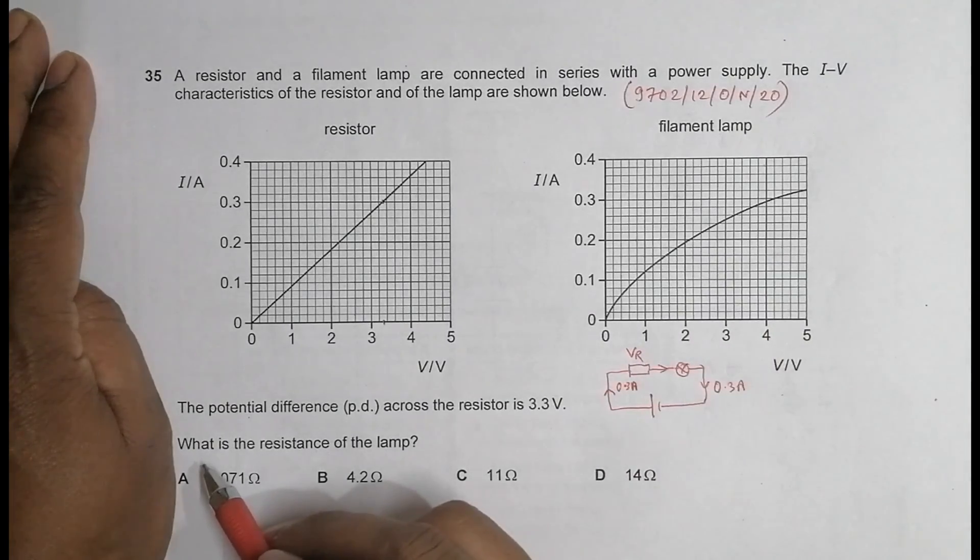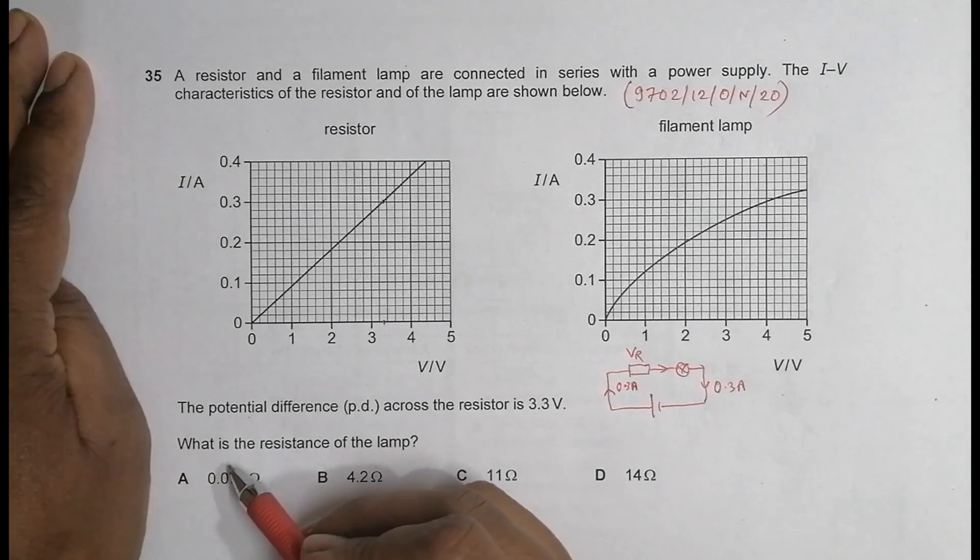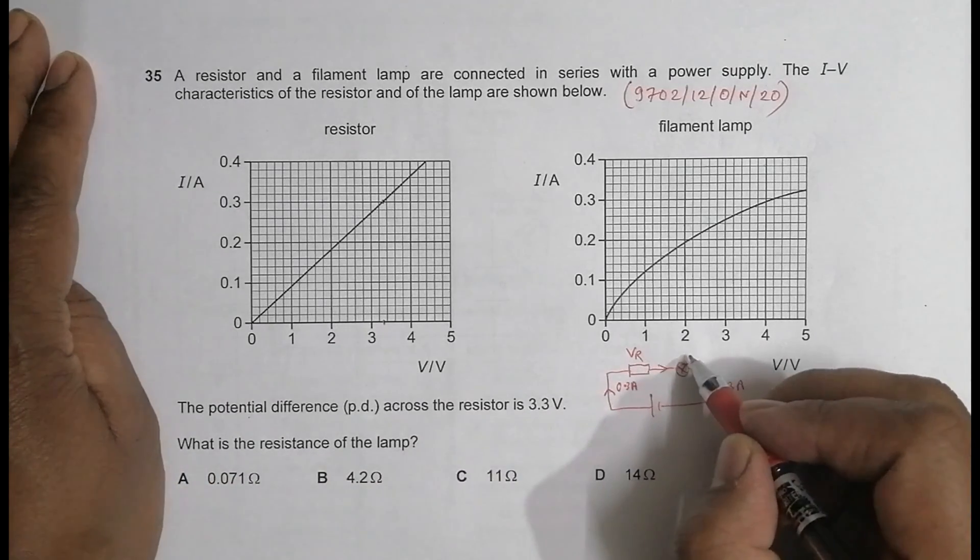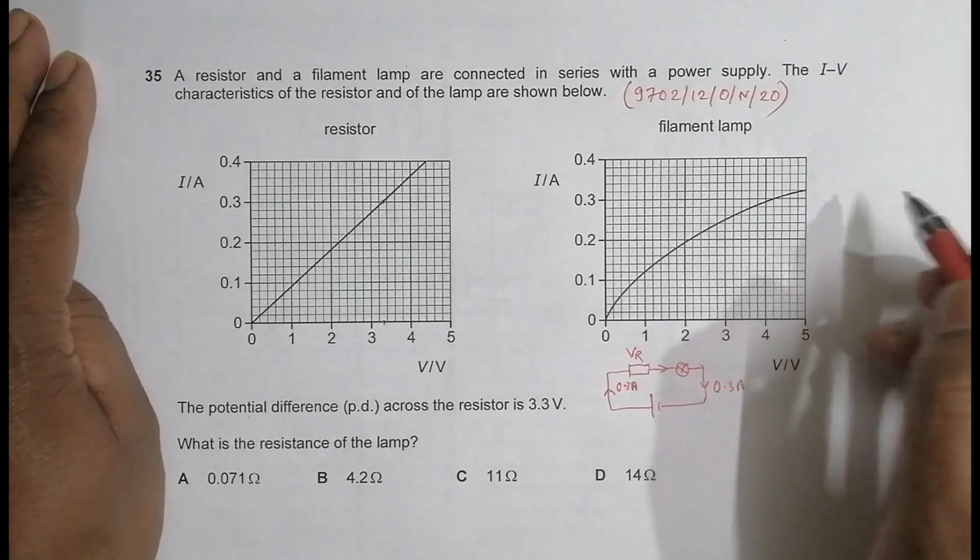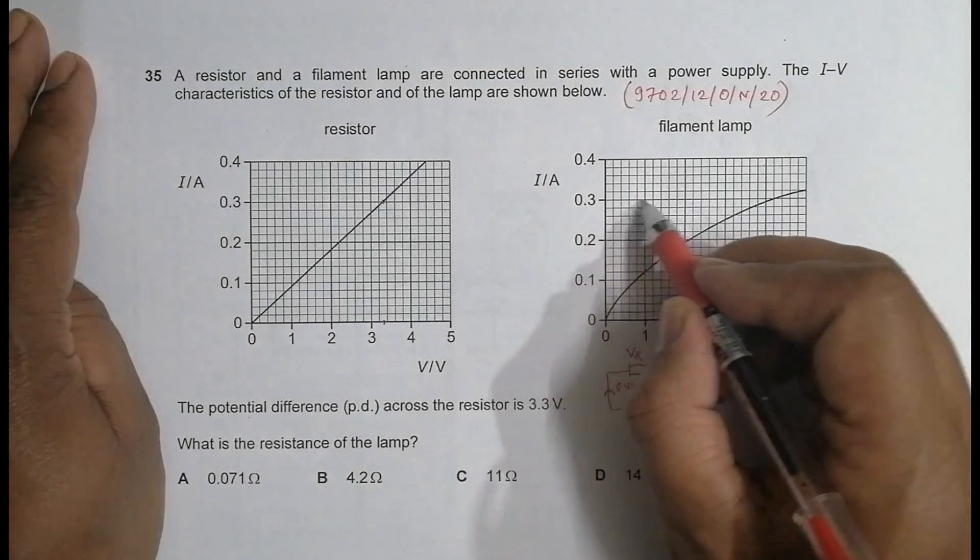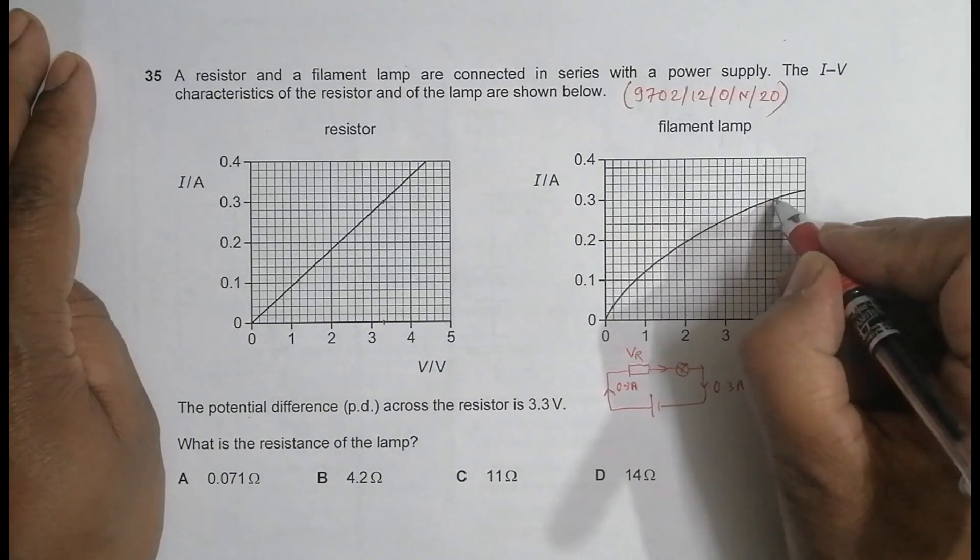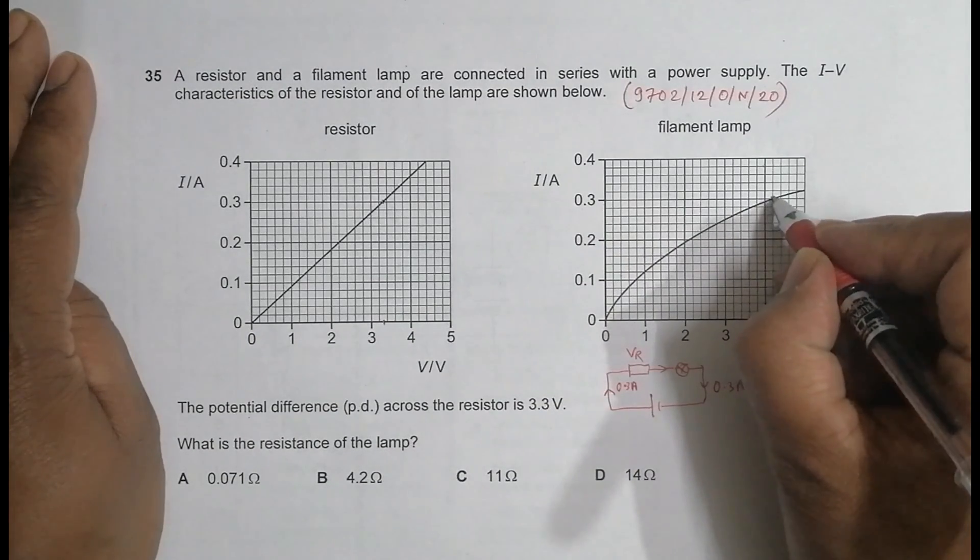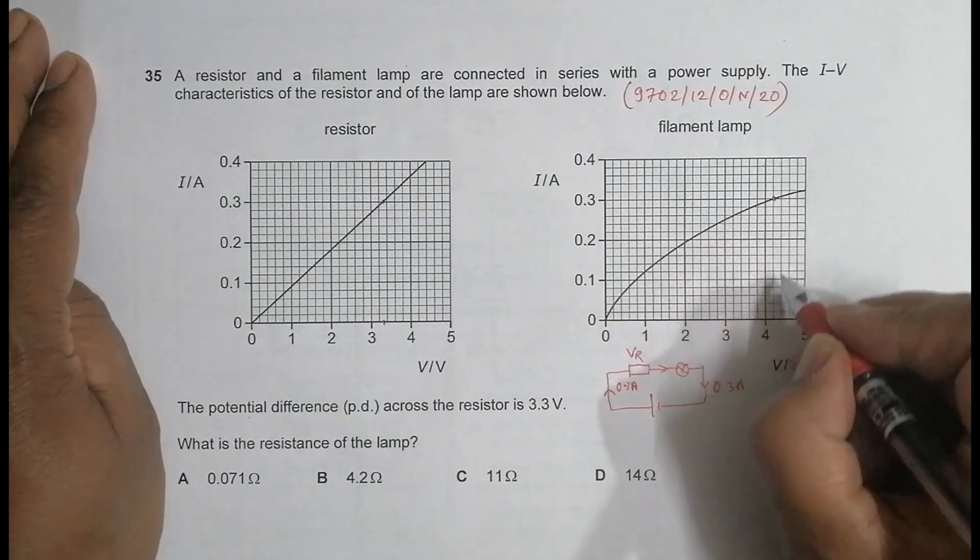So now what you need is, you are given: what is the resistance of the lamp? In order to do that, we got the current through the lamp, now we need to find the potential difference. That's why the current is 0.3 ampere.